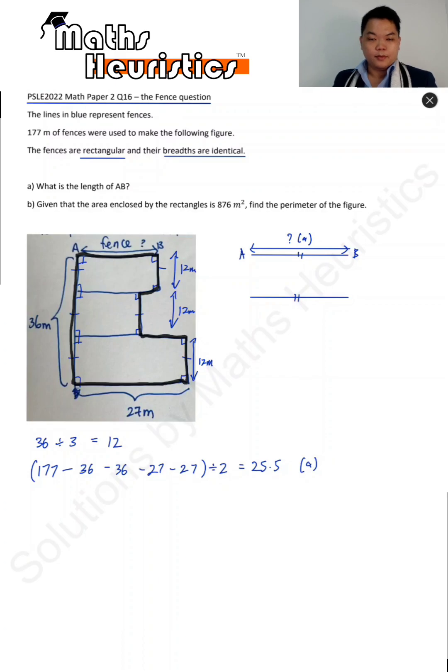Then what about part B? For part B, we need to know what these two lengths are. How can we do that? First we can find out what the area of the top and the bottom rectangles are. We can say that the area of the middle rectangle has to be the total area minus the area of the top rectangle minus the area of the bottom rectangle. So that's going to give us 246 meters squared.